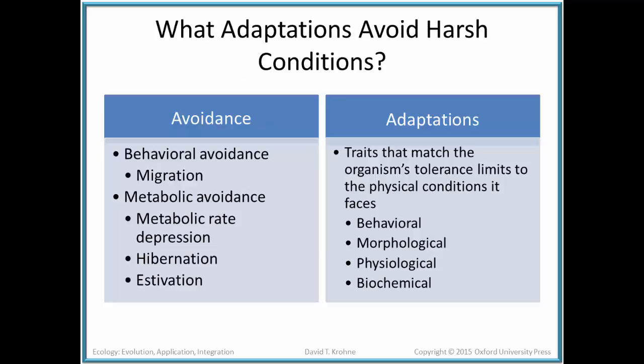What changes does an organism have to respond to harsh conditions? We'll look at this in two ways. One is to adapt — traits that match the organism's tolerance limits to the physical conditions it faces. This would include natural selection, evolution over time, changes in behavior, in form or morphology, and changes in physiology or biochemistry.